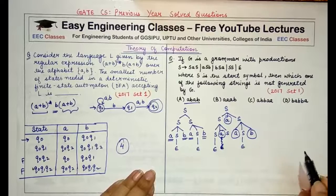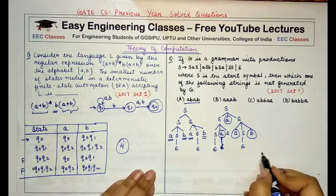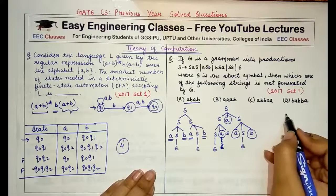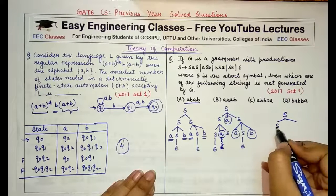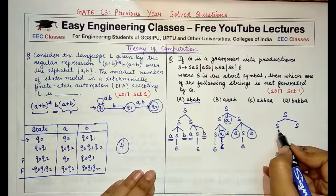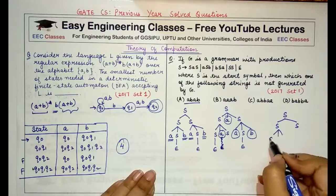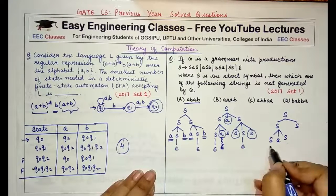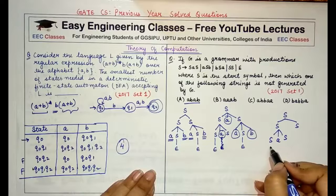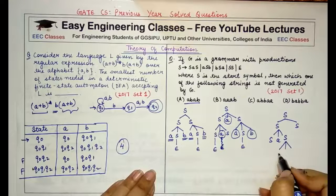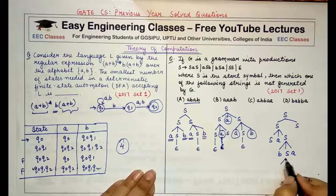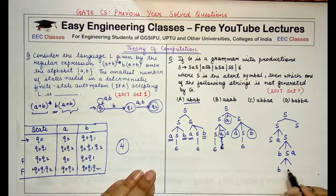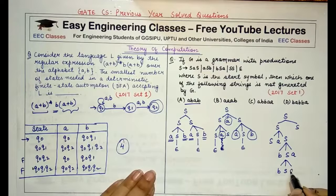Now coming to the third part, if I make here S, from S if I derive SS, from S SaS, then from the second S if I derive bSa, from this S again I derive bSa.